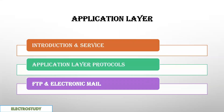Next is the final layer — the application layer. What is the application layer? What services does it provide? How does communication take place in the application layer? What are the protocols or rules followed in this layer? And we will finally be covering what FTP is and what electronic mail is.